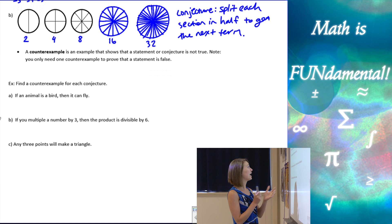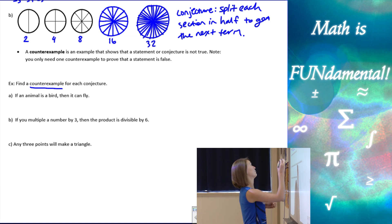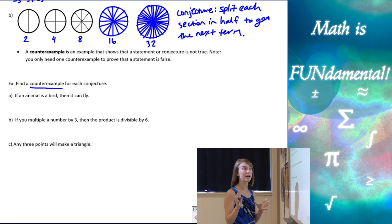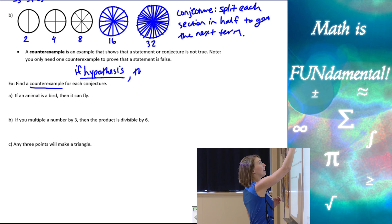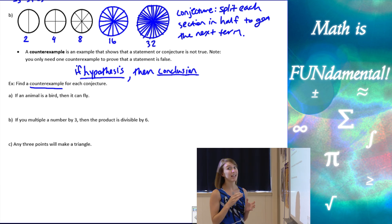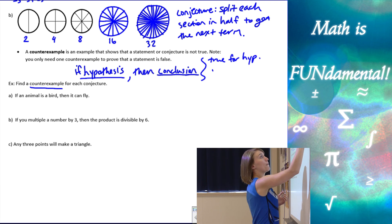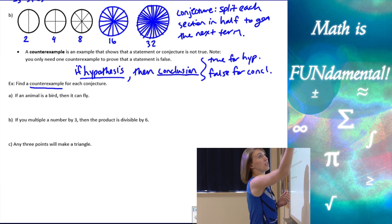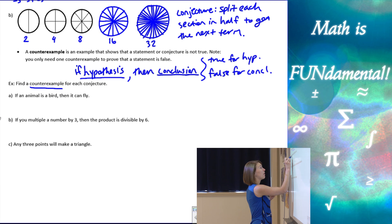Let's look at the counter example method. When we have an if-then statement, we have a hypothesis and a conclusion. A counter example needs to be true for the hypothesis but false for the conclusion. So for example A — if an animal is a bird, then it can fly — I need to find something that is a bird but cannot fly.